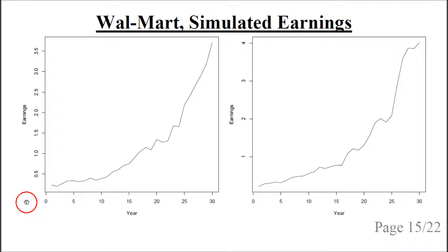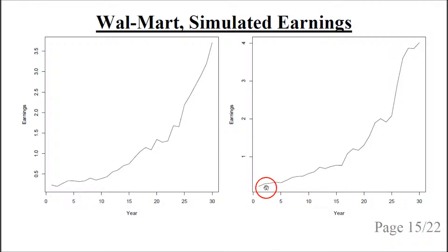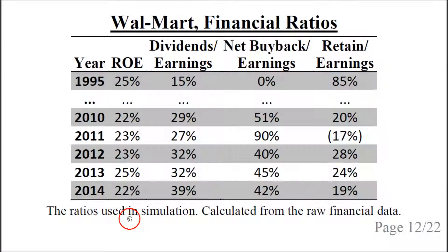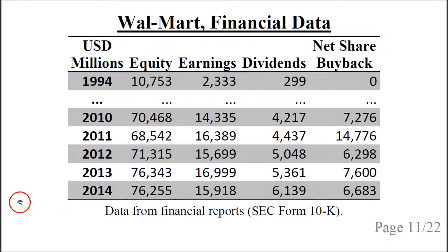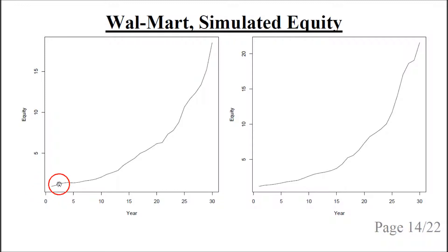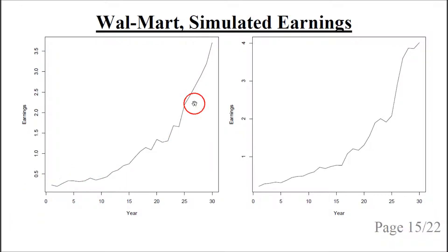This is the Monte Carlo simulated earnings. In the first simulation it goes from about 0.2 up to 3.6, and it is a bit more unstable than the simulated equity. In the second simulation the earnings start fairly close to zero and after 30 years end up at around 4. Remember that these are normalized to a starting equity of 1, so all numbers must be multiplied by the starting equity — which in year 2014 is 76 billion US dollars — to get the simulated earnings in dollar amounts.